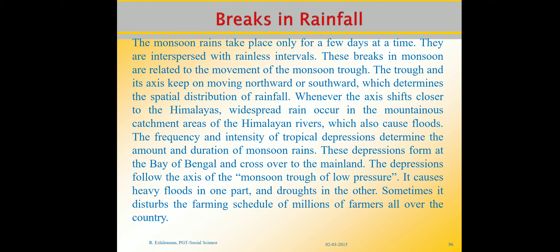Whenever the trough axis shifts closer to the Himalayas, the heaviest rain falls in the mountainous catchment areas of the Himalayan rivers, causing floods. The frequency and intensity of tropical depressions — which form at the Bay of Bengal and cross over the mainland — determine the amount and duration of rainfall. This causes heavy rain and floods in one part while bringing drought to another region, disturbing farming schedules of millions of farmers all over the country.